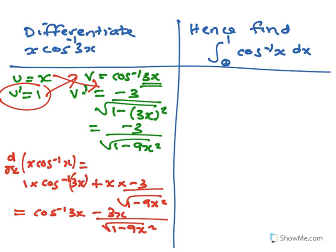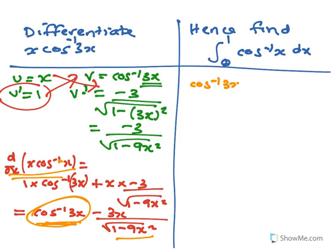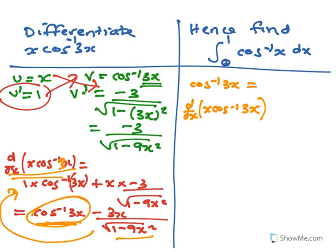Which gives cos⁻¹(3x) minus 3x over root 1 minus 9x². So differentiating this gives us that result, and if we want to hence integrate, we need to isolate cos⁻¹(3x) on its own. So we know that cos⁻¹(3x) equals d/dx of x·cos⁻¹(3x) plus 3x over the square root of 1 minus 9x².